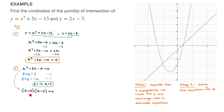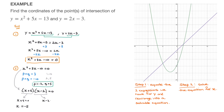Now that this is in factored form, we can solve the equation. We have two parentheses being multiplied and the product equals 0, which tells us either x plus 5 equals 0, or x minus 2 equals 0. If x plus 5 equals 0, then x equals negative 5. On the other hand, if x minus 2 equals 0, then x equals 2.